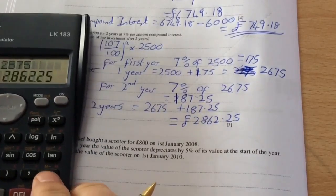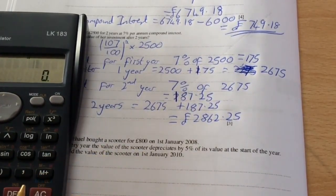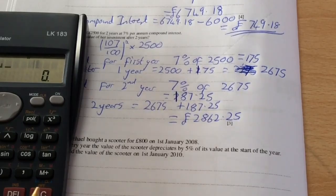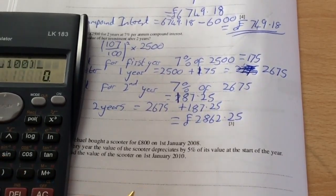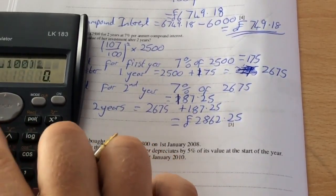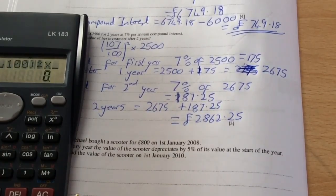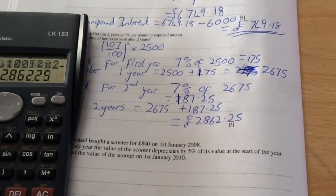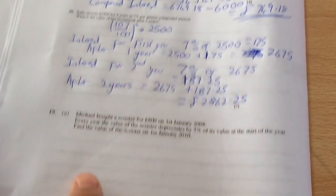Let me just check by using the formula that I get the same answer. Open bracket, 107 over 100 to the power of 2 times £2,500 gives me the same answer. So I know I've done it correct.